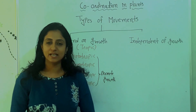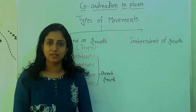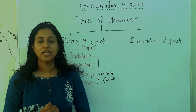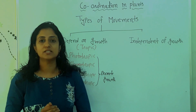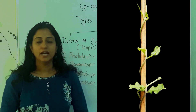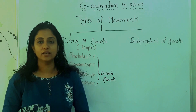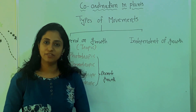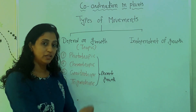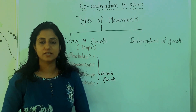And now the last tropic movement is thigmotropic movement. Thigmotropic movement is a growth directional movement. It is found in some twining plants and tendrils. Plant biologists have also found this movement in some flowering plants and fungi. This is all about tropic movements where growth takes place.